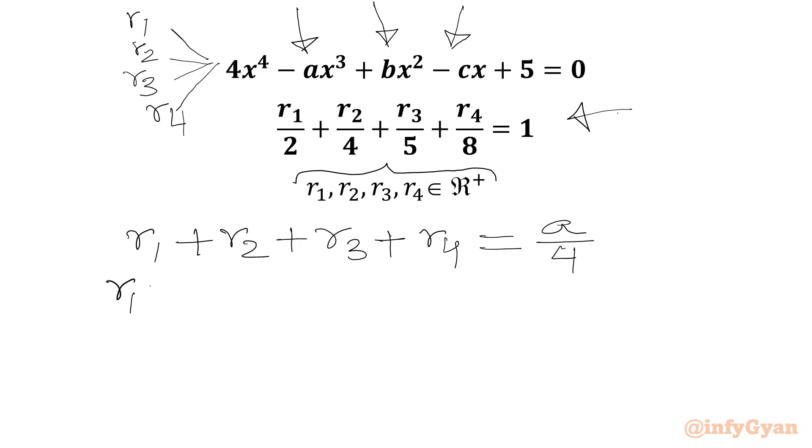Sum of roots taken 2 at a time: R1R2 plus R1R3 plus R1R4 plus R2R3 plus R2R4 plus R3R4. Sum of roots taken 2 at a time value will be B over 4.